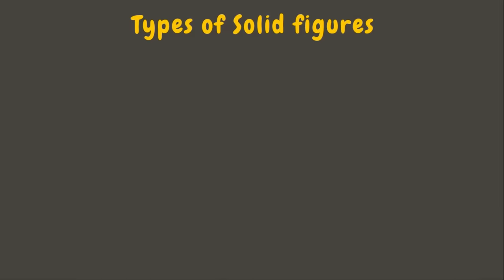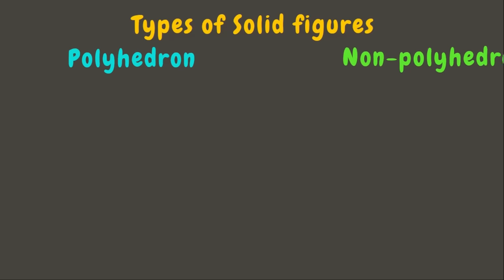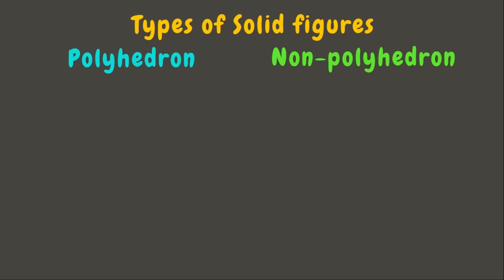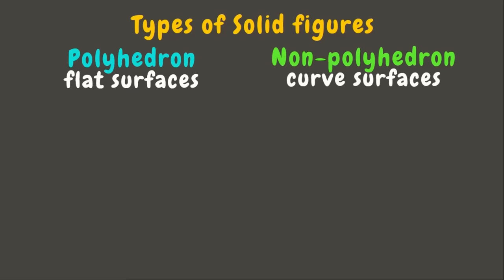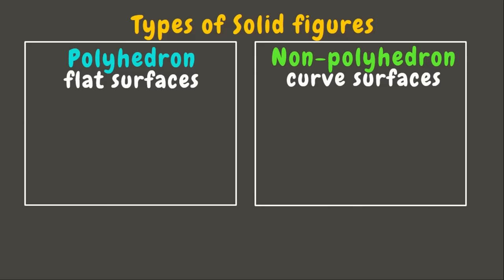Now that you already know the parts of a solid figure, let's learn about the types of solid figures. There are two types: polyhedron and non-polyhedron. A polyhedron has flat surfaces, while a non-polyhedron has curved surfaces. Now let's try to classify these objects.